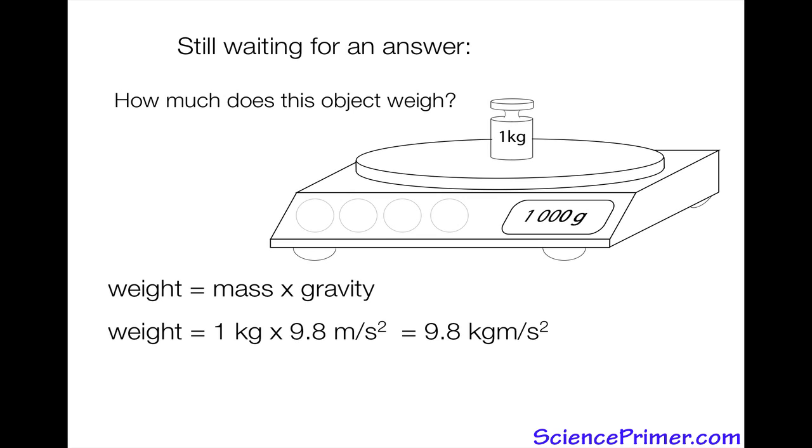Weight is 1 kilogram, gravity on Earth is 9.8 meters per second squared. 1 times 9.8 equals 9.8 kilograms meters per second squared. That unit can be changed from kilograms meters per second squared to newtons. So the answer to this question is: a 1 kilogram weight has a weight of 9.8 newtons.